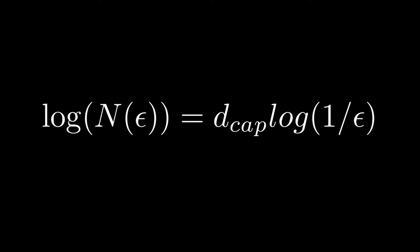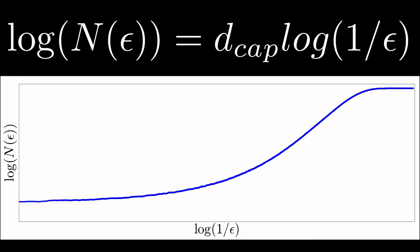Take a closer look at this formula. What this says is, if we were to calculate the number of epsilon balls needed to cover the object for a range of epsilon, and we were to plot this on a log-log scale, if a straight line appears, then the slope of that line will be an approximation of the capacity dimension.